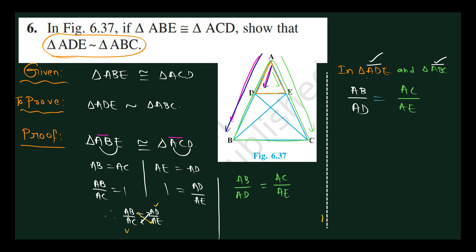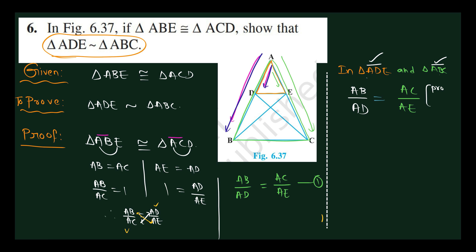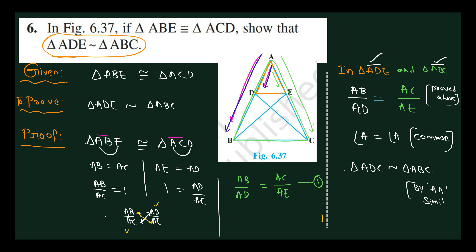So AB by AD equals AC by AE — this is proved. Now angle A is common for both the orange triangle and green color triangle, so angle A equals angle A, which is common.